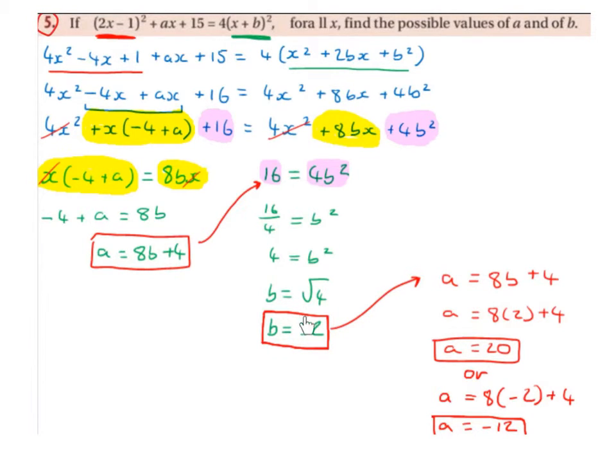So we're going to substitute 2 and then separately we're going to substitute minus 2 into 8b plus 4. So we have a equals 8b plus 4. We're going to swap the 2 for positive 2 this time, so 8 times 2 is 16 plus 4 is 20. So a is equal to 20.